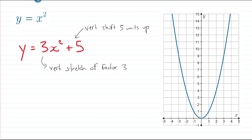Let's graph this function. I'm going to do both transformations in one step without a table of values. I need to pick some nice points — points I can read easily at grid line crossings: (0, 0), (1, 1), and (-1, 1) are good ones. I won't bother with (2, 4) because tripling that y value and adding 5 gives 17, which is off my graph.